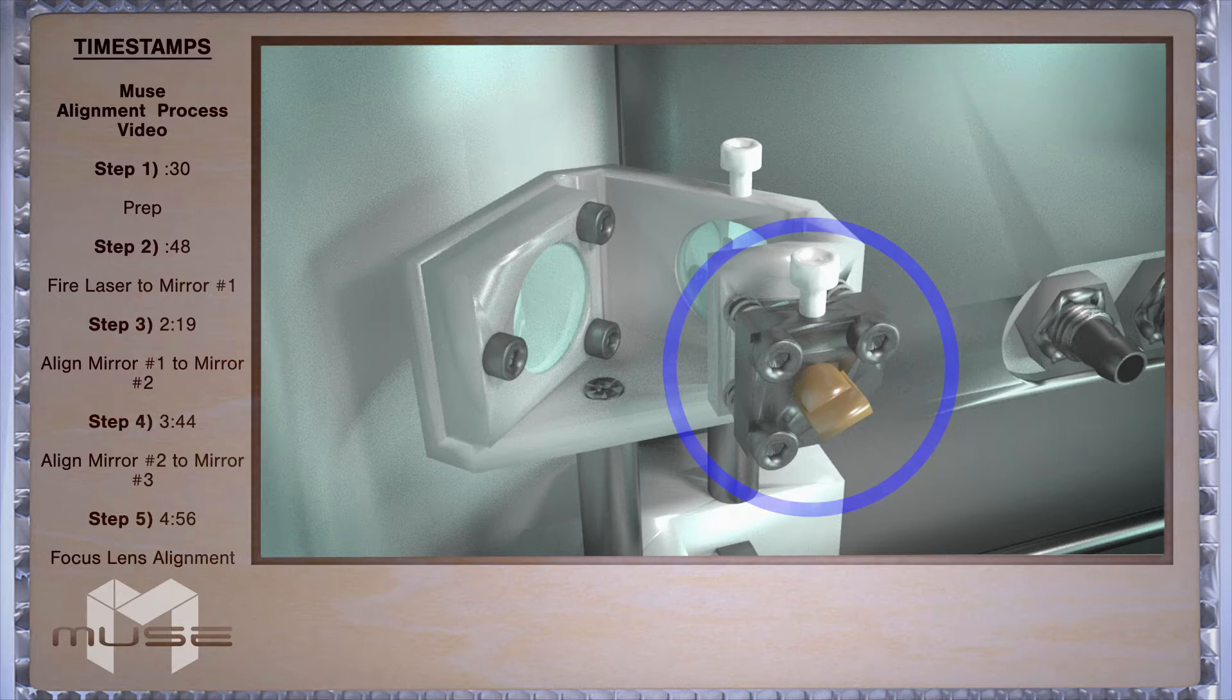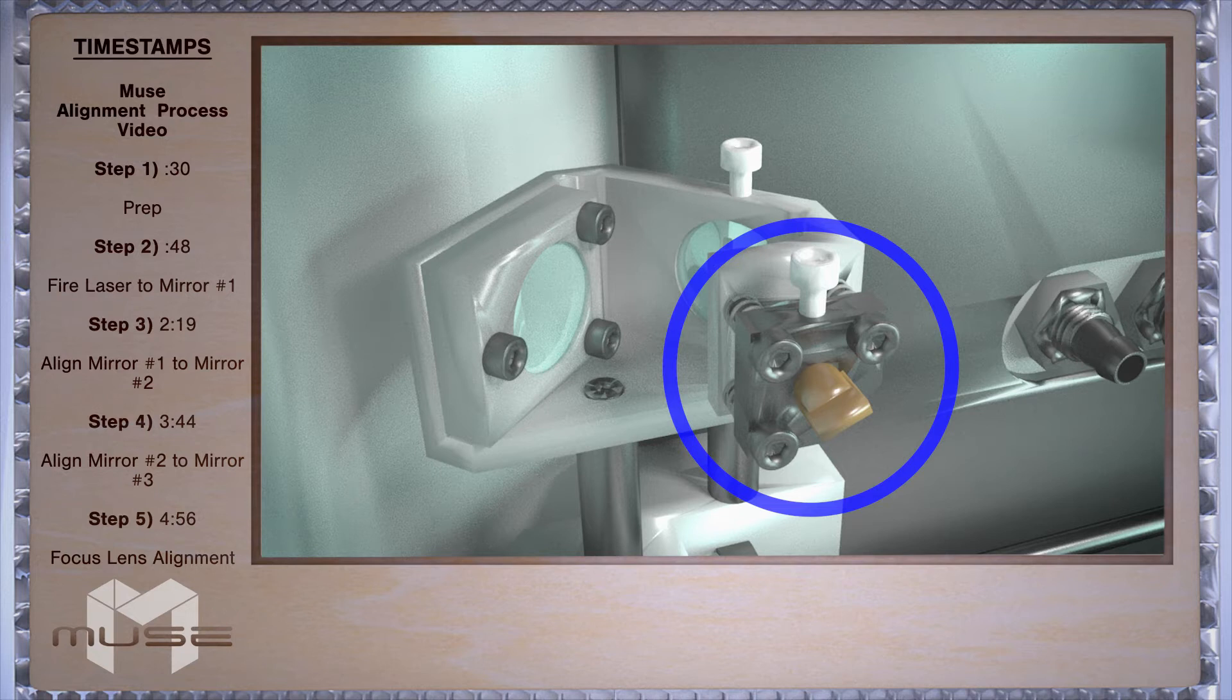Locate your red beam diode and notice the difference between the red beam diode and mirror one. Be careful not to confuse the two or else your adjustments will be off.